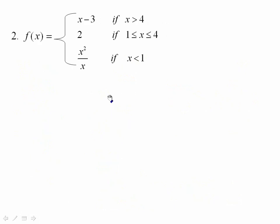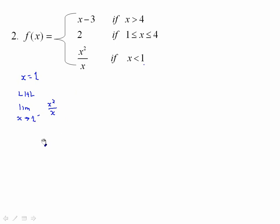Number 2 is more of the same but a more complex function. The two breakpoints are 1 and 4 — we need to check them both. Taking the left-hand limit as x approaches 1 from the left, we'll be dealing with x²/x. This function has a built-in discontinuity at x = 0, so x cannot equal 0 even though we divide by x to simplify. There is already a discontinuity there.